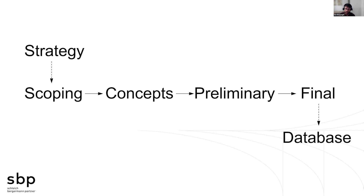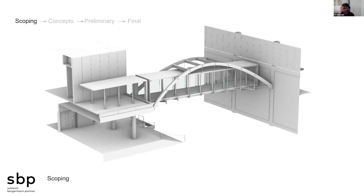Let me run through four case studies to show how we use this tool, and then talk about the database and some of the challenges. The first project is an example of using embodied carbon calculations at the scoping phase of pedestrian bridges — starting with a very early design concept the client has and giving them strong steers. This bridge is a slightly unusual one: it connects two buildings.